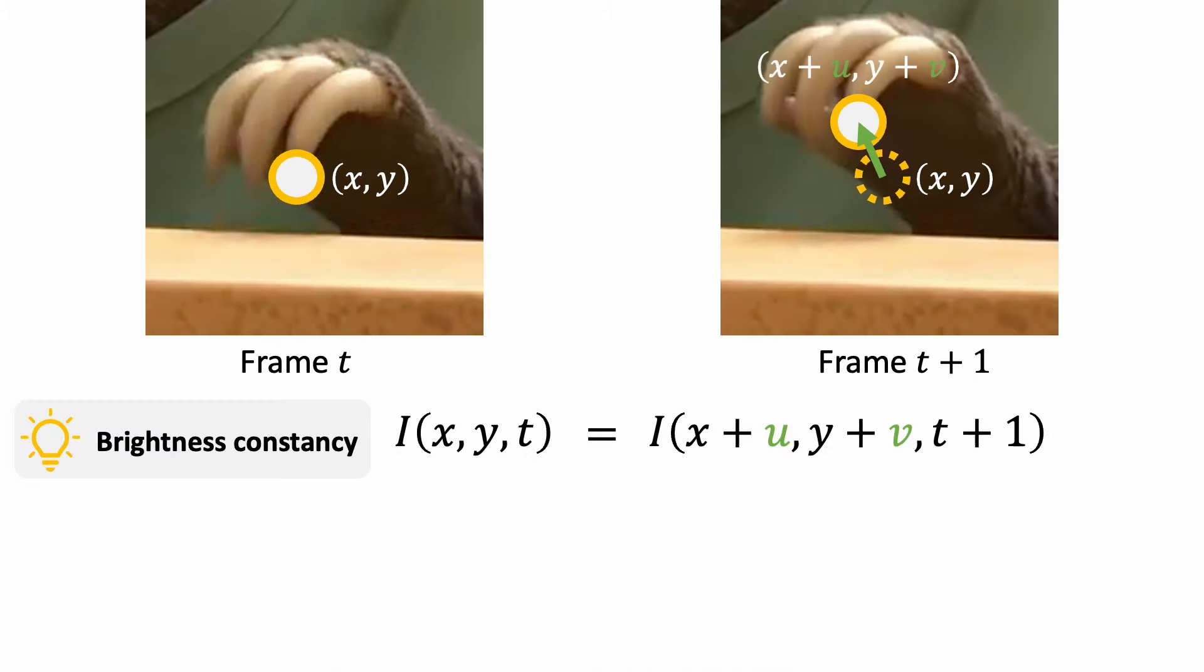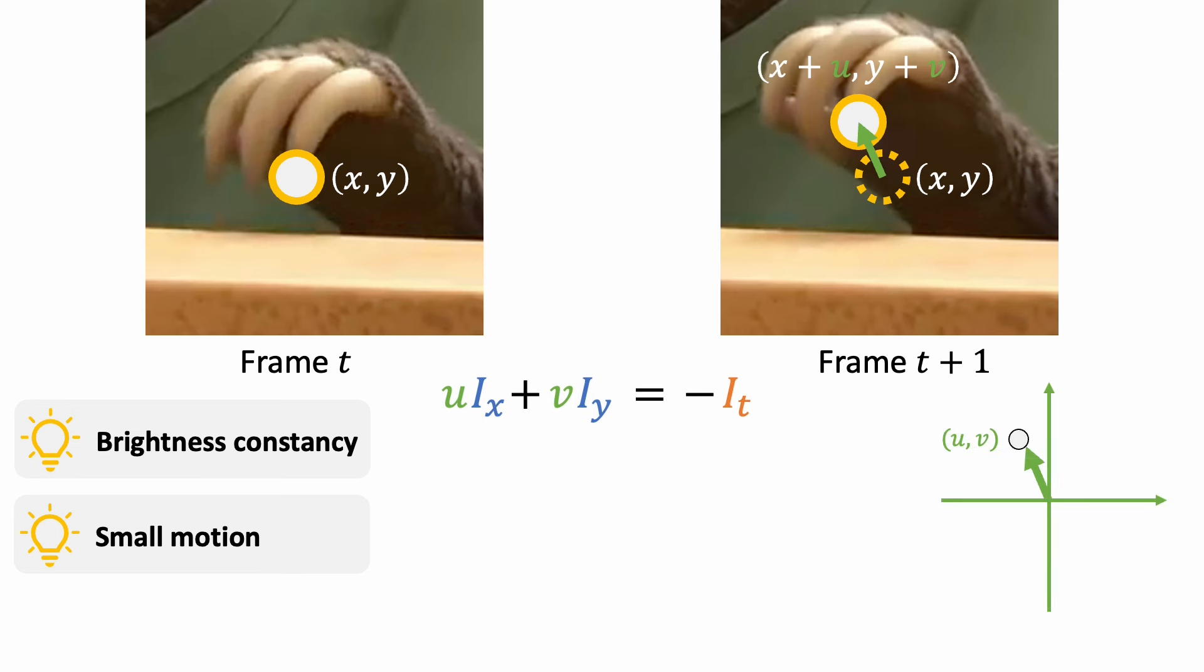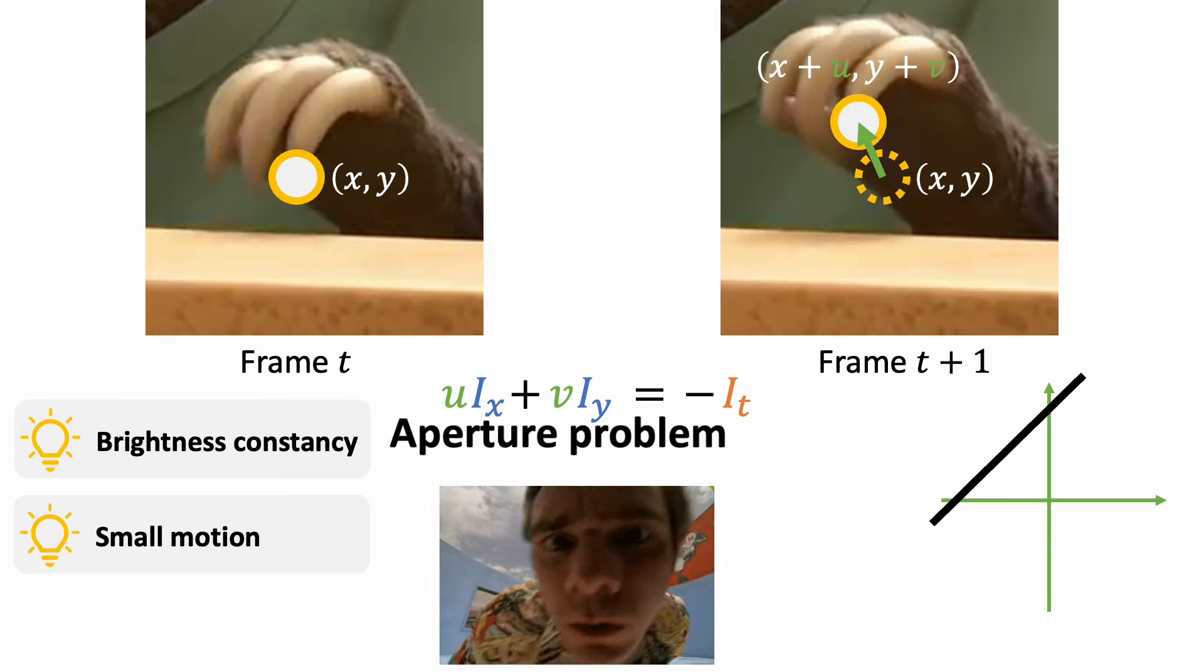We first assume that the intensity of the same point does not change between the two frames. We then assume the motion is small and derive the first order approximation of the intensity using Taylor expansion. We now have our first equation for motion estimation, but we have two unknowns. A single equation only tells us that the motion UV lies on a line, but does not tell us where it is. This is known as the aperture problem.